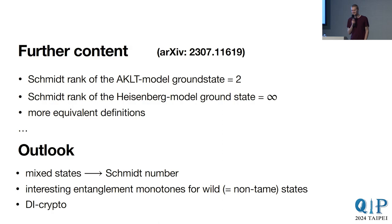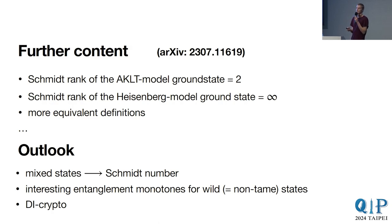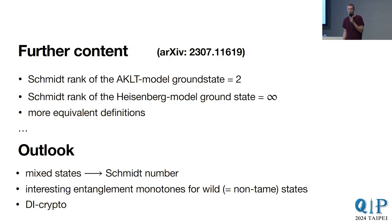Question: Does the compression always exist for any state? In the commuting operator framework, yes, always — you can take the GNS representation and restrict it to the local algebra. In the tensor product framework, if and only if the state is tame. And if you have Haag duality, there's a unique minimal compression, which is good.